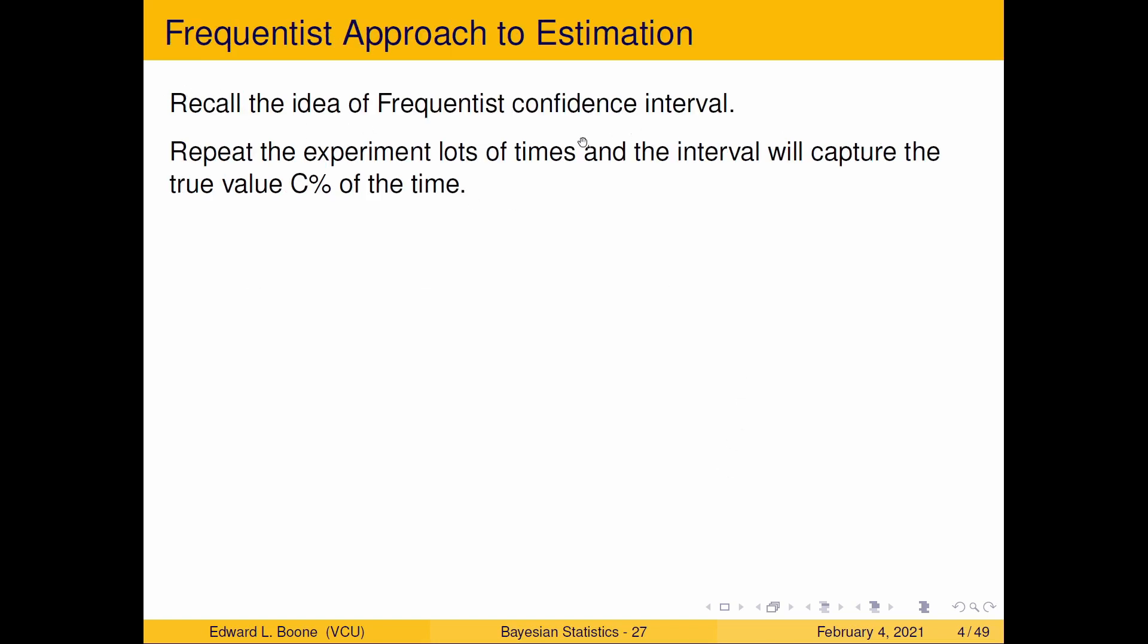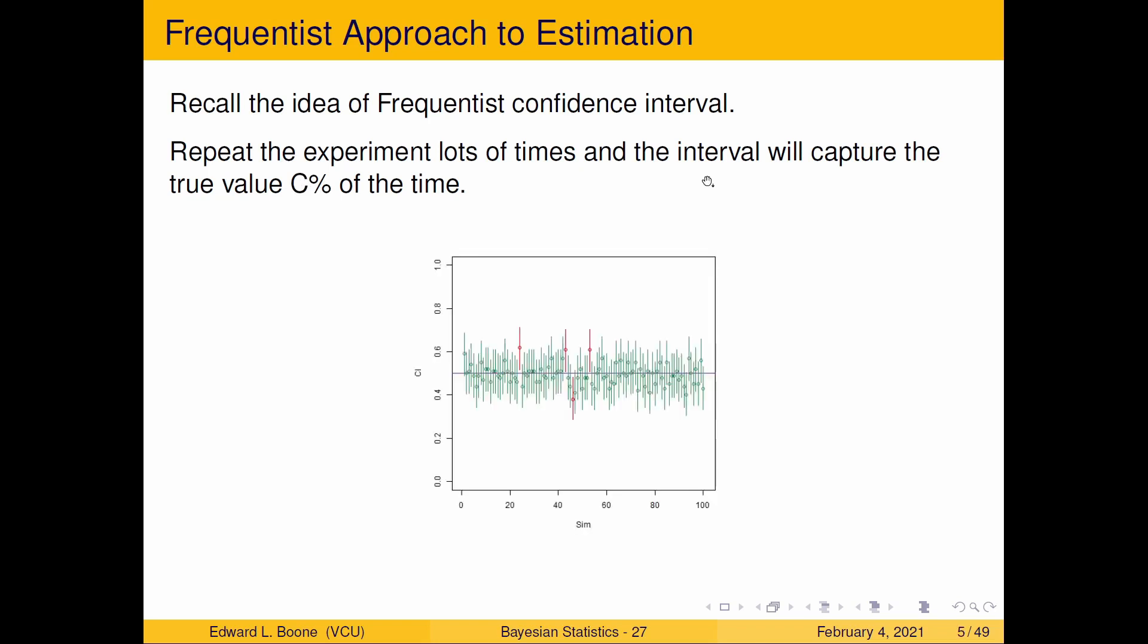Recall the frequentist confidence interval. The typical suggestion or way to interpret it is if you were to repeat the experiment lots and lots and lots of times the interval will capture the true value C% of the time, this is your confidence level. So think about that, the interval is the thing that's moving and here is a picture of that.